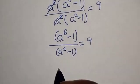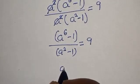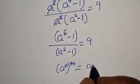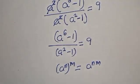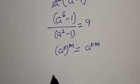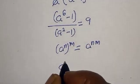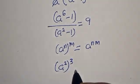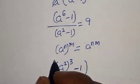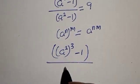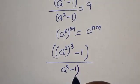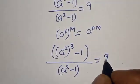Remember this rule: if you have a raised to power n, raised to power m, this is equal to a raised to power n times m. Then, a raised to power 6 can be written as (a squared) to the power of 3. So we have [(a squared) to the power of 3 minus 1] divided by (a squared minus 1) is equal to 9.